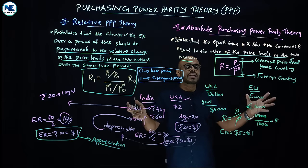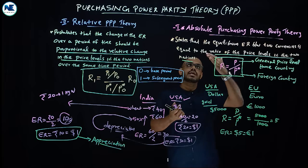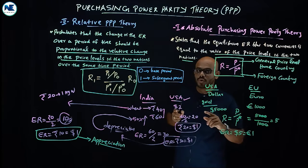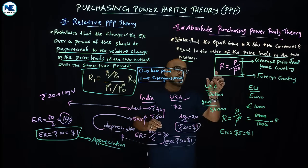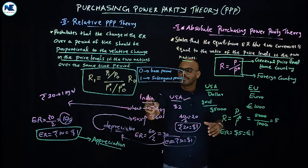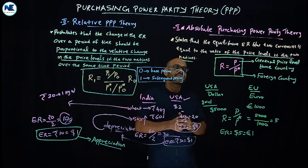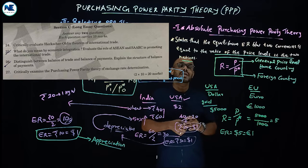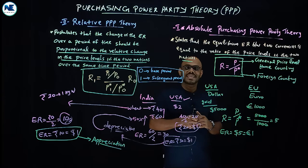To conclude, we have discussed both versions of purchasing power parity theory — absolute purchasing power parity theory and relative purchasing power parity theory — along with their formulas, implications regarding appreciation and depreciation, and real examples. All the very best, have a nice day, thank you.